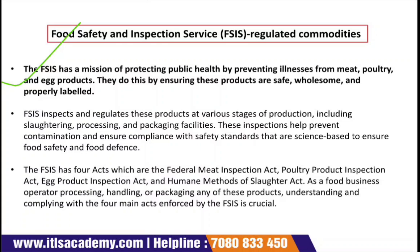FSIS inspects and regulates these products at various stages of production. This includes the slaughtering stage — when an animal is slaughtered, an inspection is done to check the method of slaughtering, whether knives and machines are properly cleaned, whether the place is hygienic, and whether the animal is clean. There is also a risk of physical contamination, known as cross-contamination, from the animal's body after cutting.